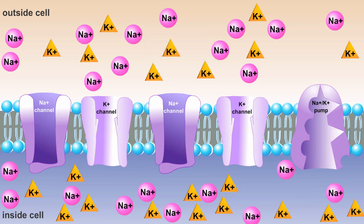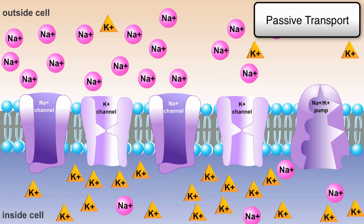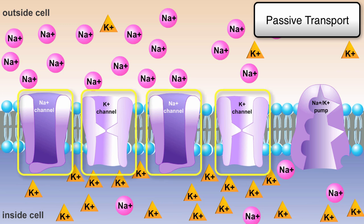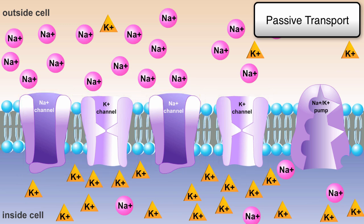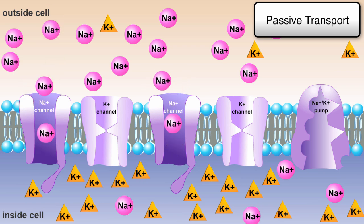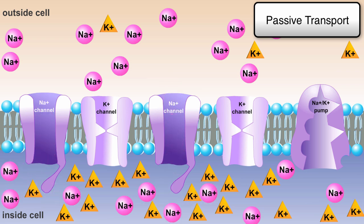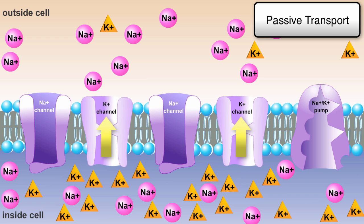The first process will be passive, and therefore will not require any energy. In this form of transport, proteins in the cell membrane act as channels, allowing the diffusion of ions from areas of high concentration to areas of low concentration. For example, when the sodium channel opens, sodium ions move from an area of high concentration outside the cell to an area of lower concentration inside the cell. The exact opposite happens for the potassium channel, which allows the movement of potassium ions from inside the cell to outside.